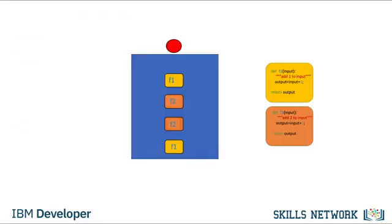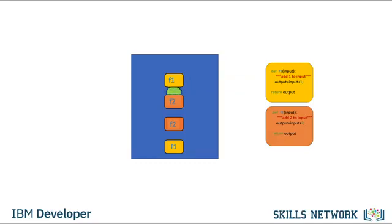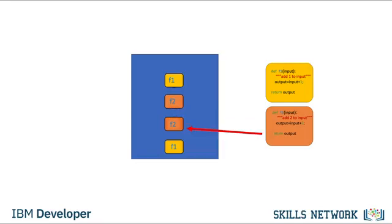You can think of the process like this: when we call function F1, we pass an input to the function. These values are passed to all those lines of code you wrote, and this returns a value. You can then input this value to a new function, F2. When we call F2, the value is passed to another set of lines of code and the function returns a value. The process is repeated, passing the values to the function you call. You can save these functions and reuse them, or use other people's functions.